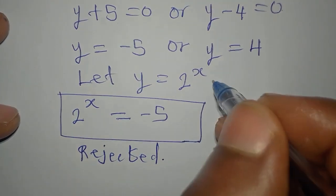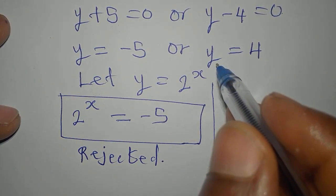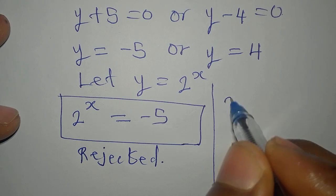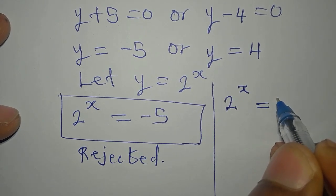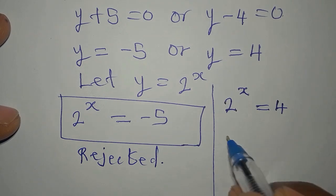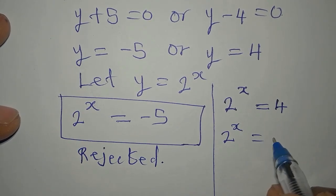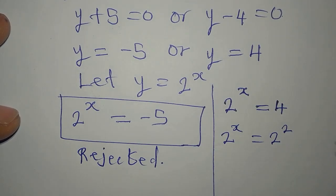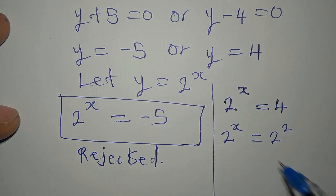And I go straight to the second value of y, which is y equals 4. And then 2 to the power of x will be equal to 4. And then we have 2 to the power of x equals 2 to the power of 2, because 4 is 2 to the power of 2.